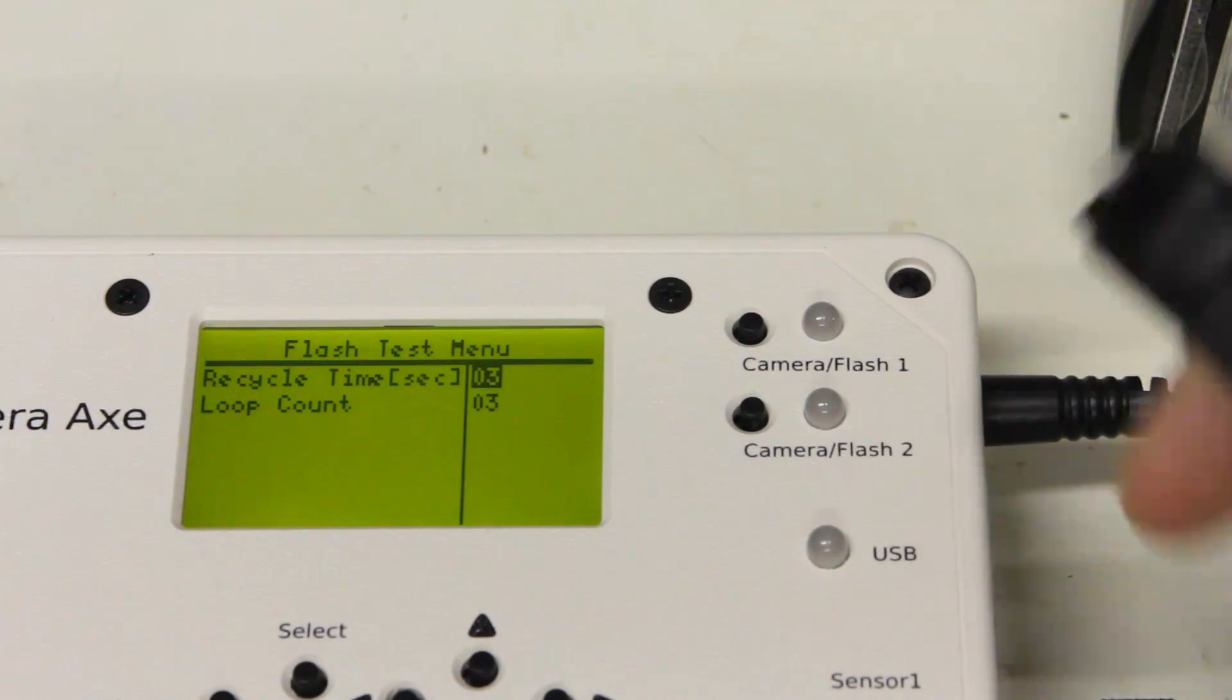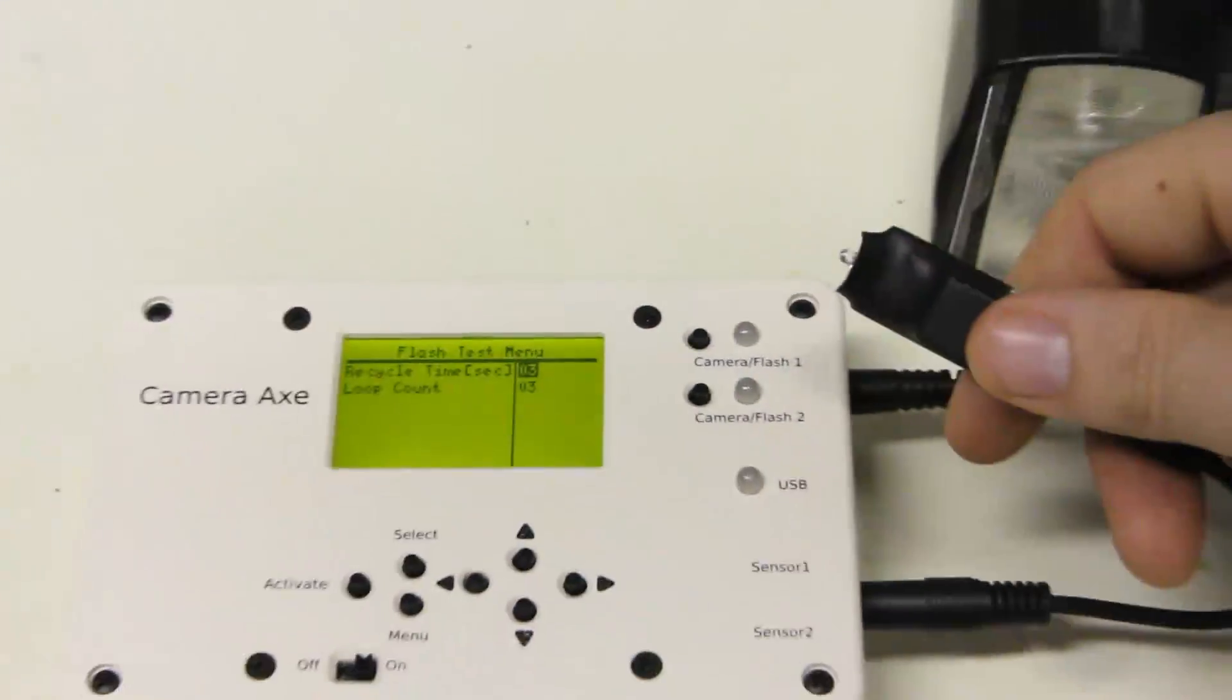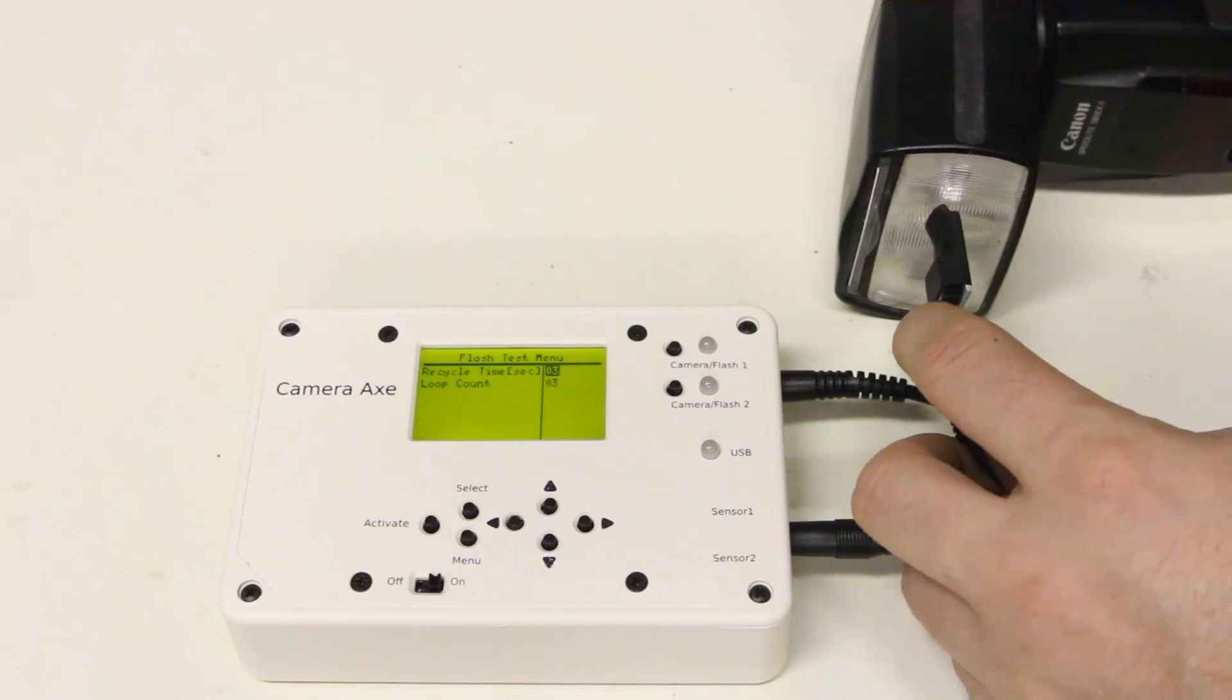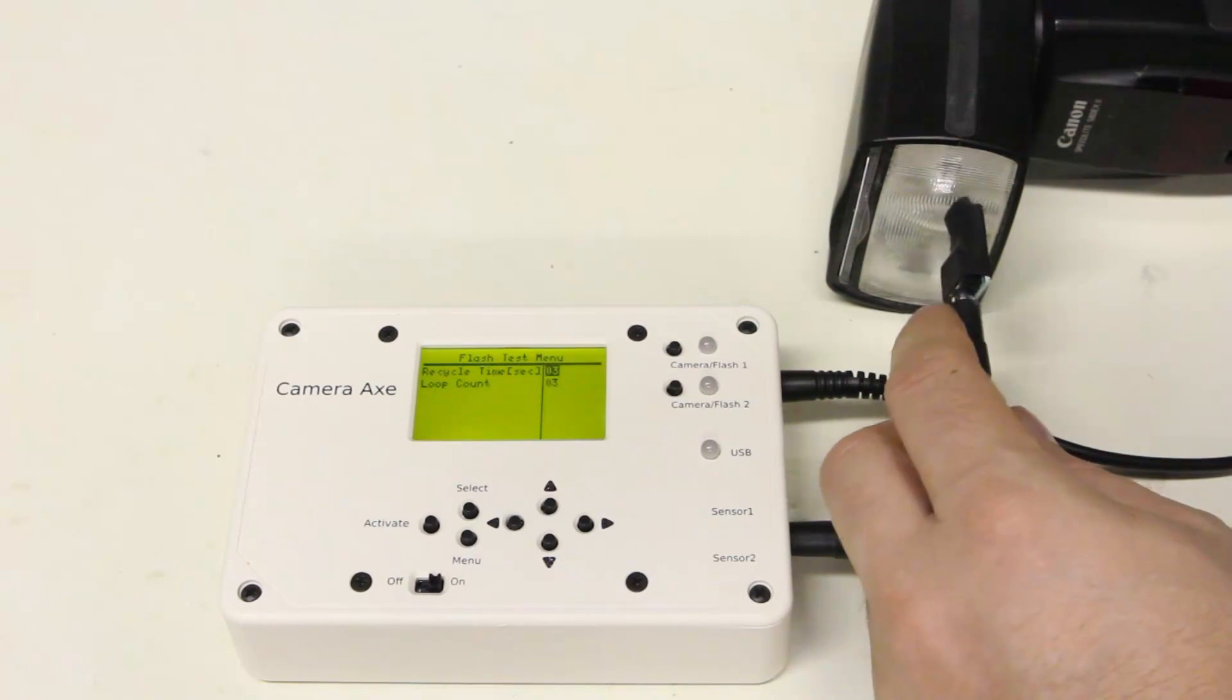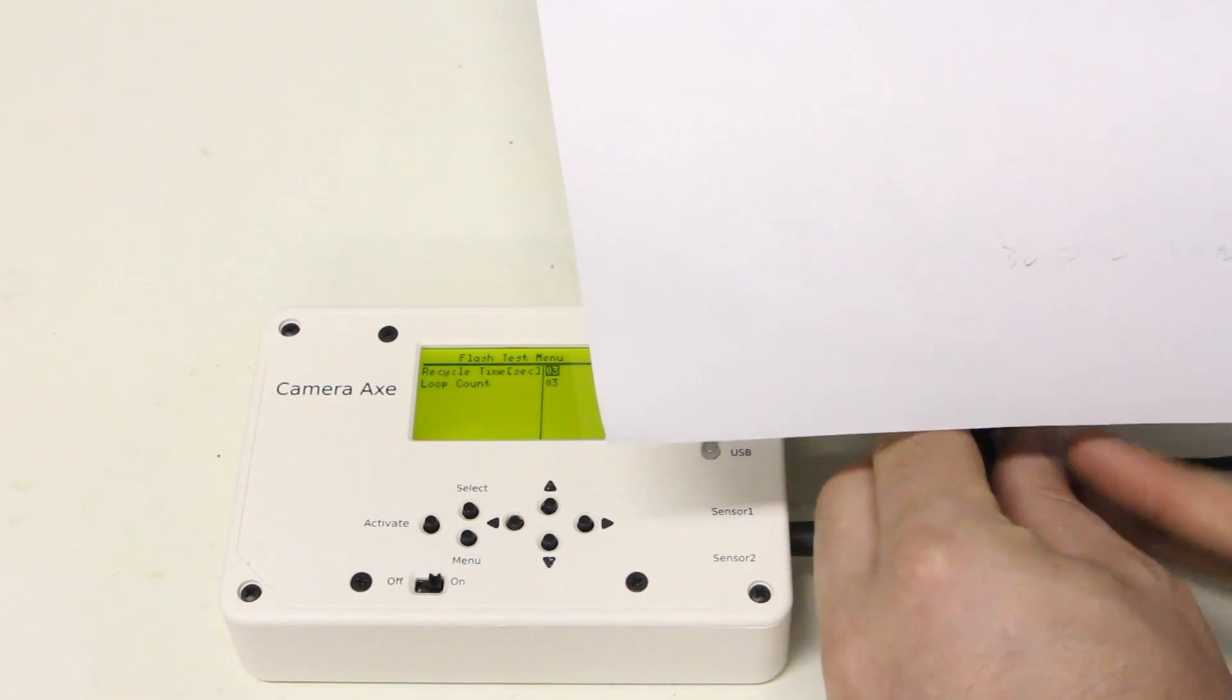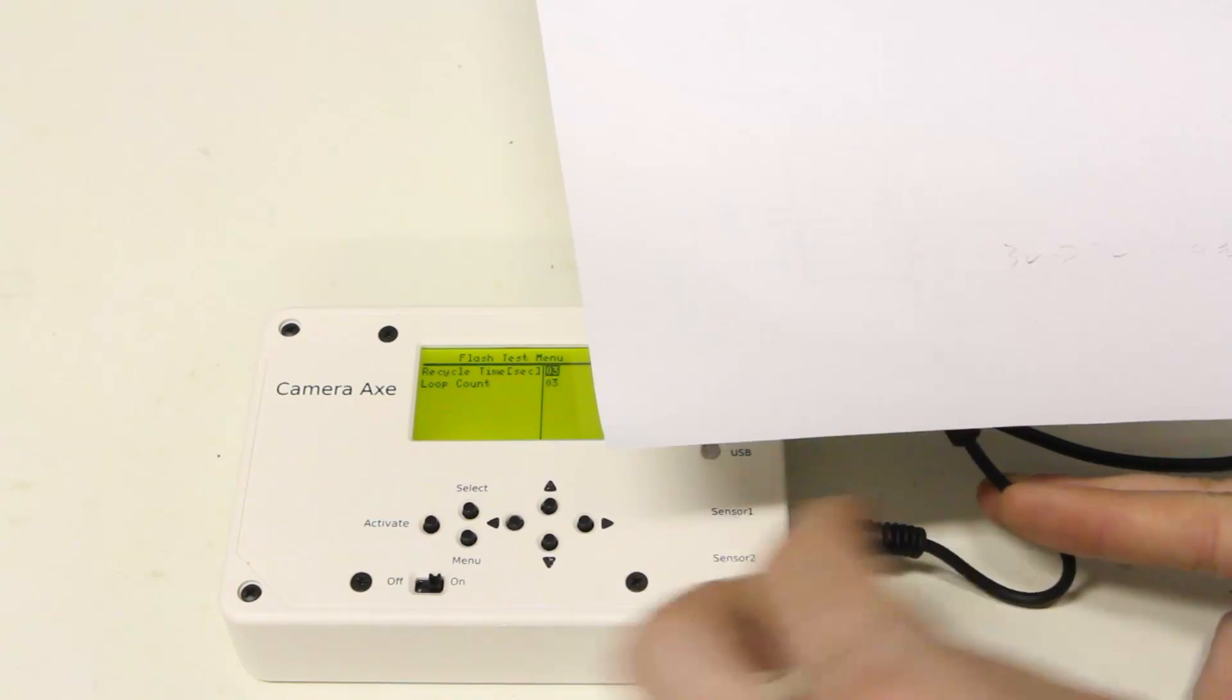You take the standard light sensor with the camera axe and point it directly at the flash unit. This light sensor is sensitive to just standard light in your room, so I'm going to cover it up with a sheet of paper to make sure the ambient light isn't affecting it. Then I just hit activate.